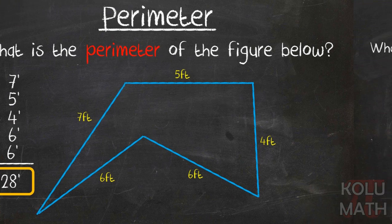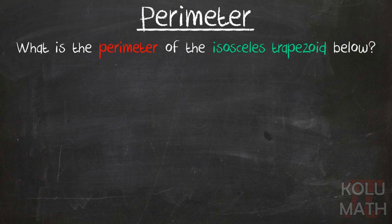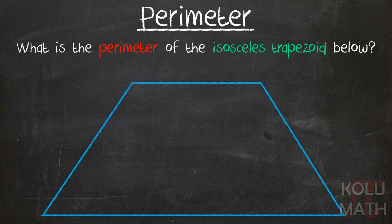All right. Let's take a look at a slightly more complicated example here. What is the perimeter of the isosceles trapezoid below? An isosceles trapezoid. And this is the information they're going to give us. Well, wait a minute. Seems like they left out something.